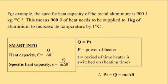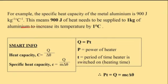For example, the specific heat capacity of the metal aluminum is 900 Joules per kilogram per degree Celsius. This means 900 Joules of heat needs to be supplied to 1 kilogram of aluminum to increase its temperature by 1 degree Celsius.